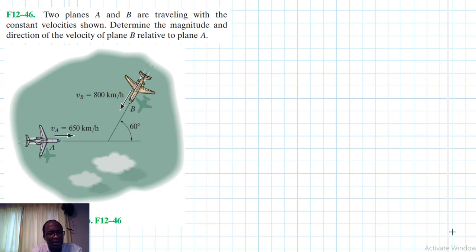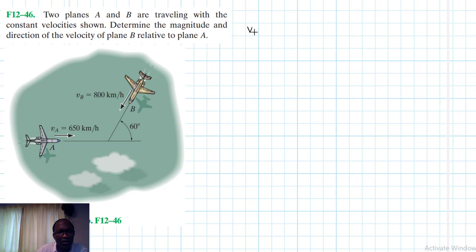We are dealing with relative motion, and we have been asked to determine the velocity of B relative to A, which is equal to VB minus VA.